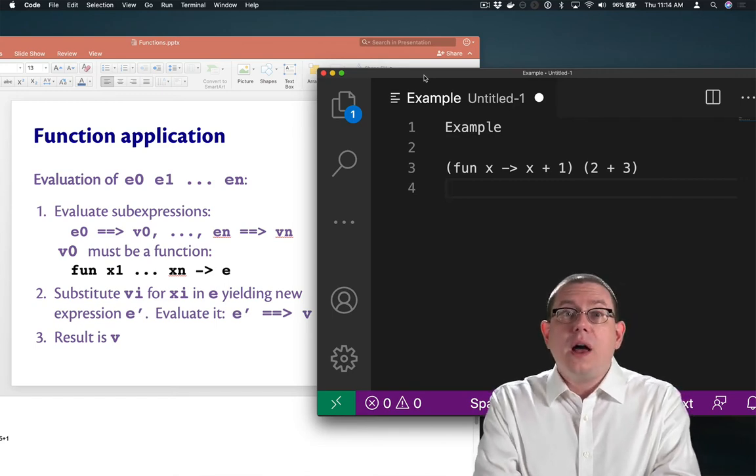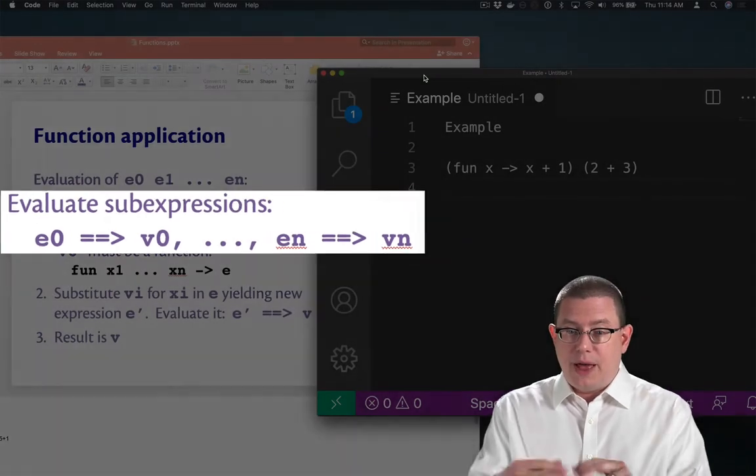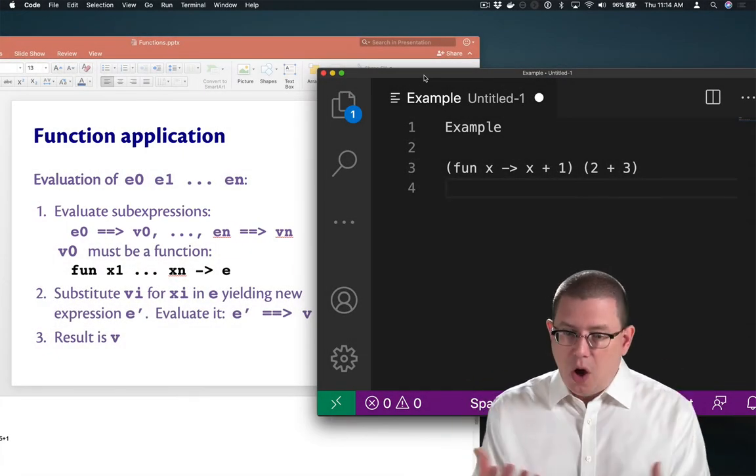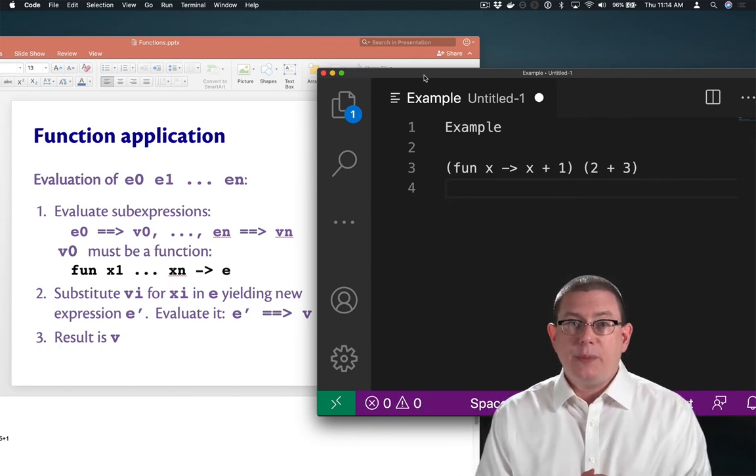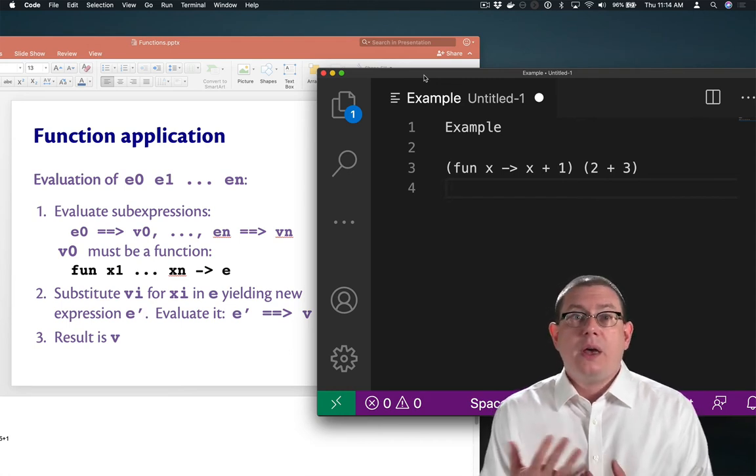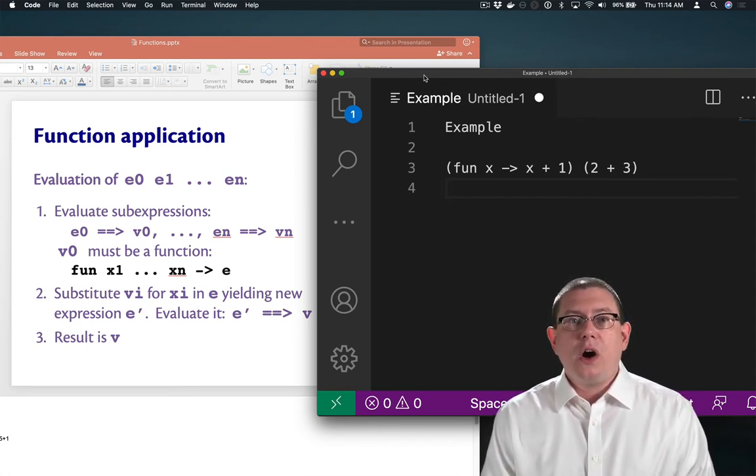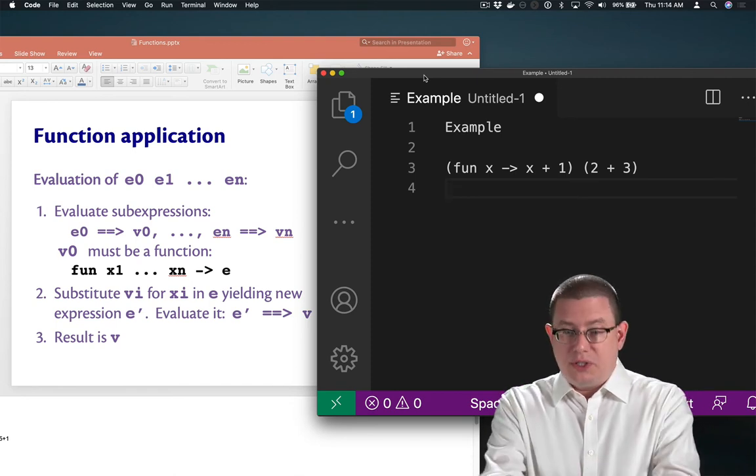What do our evaluation rules say? First, evaluate e0 to a value. Already done because fun x arrow x plus 1 is an anonymous function and therefore is already a value. Also, evaluate the arguments to values, so that means evaluating 2 plus 3, which of course is going to give us 5.